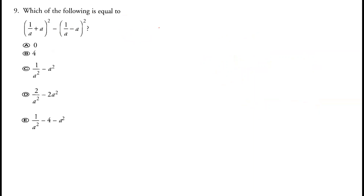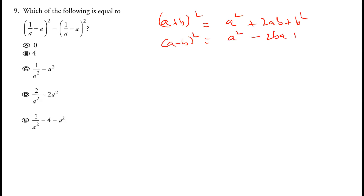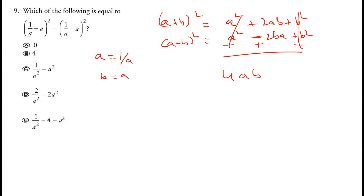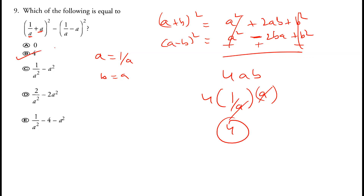Which of the following is equal to (1 over a plus a) squared minus (1 over a minus a) squared? Using the identity (a plus b) squared minus (a minus b) squared equals 4ab, we let a equal 1 over a and b equal a. So 4 times 1 over a times a — the a's cancel — and we get 4. Option B is correct.